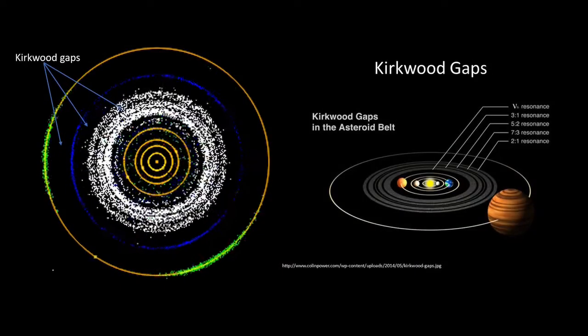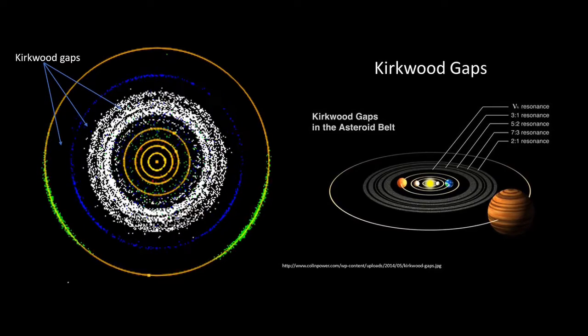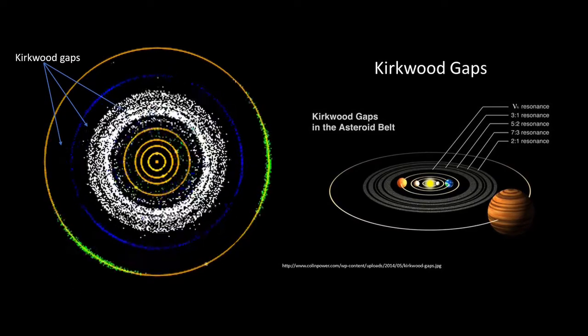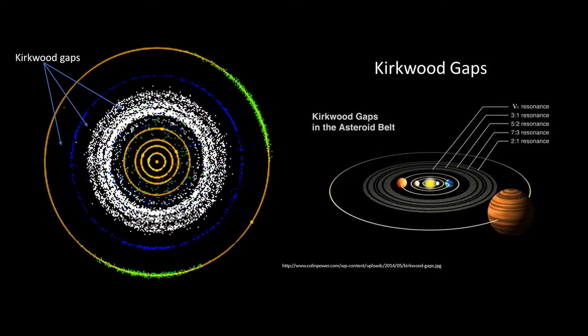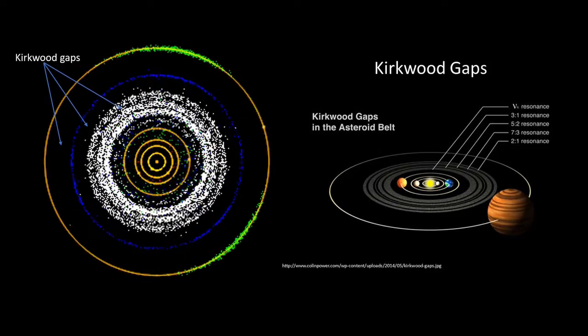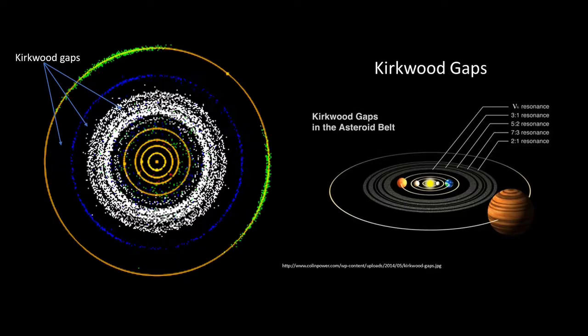These are locations of gaps in the asteroid distribution, where asteroids have been ejected from these almost empty lanes by repeated perturbations from overlapping resonances. Sometimes, an asteroid will pass too close to a planet and be ejected from the asteroid belt entirely.